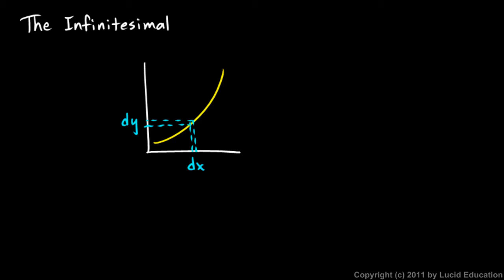James Gleick, in his biography of Newton, referred to infinitesimals as quantities that simultaneously are and are not zero. So it's something that is basically zero in size but can still be used in calculation.